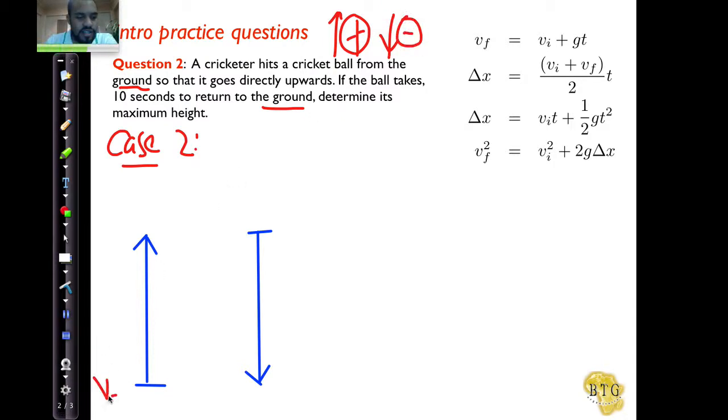Okay, so let's choose the initial velocity here. V initial, do we know it? No, we don't, so there's a question mark there. And we know it's going to be a positive value because our reference system says anything upwards is going to be positive. At this point in time, we know V final is equal to zero meters per second.